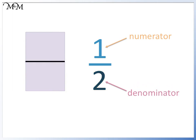This shape is divided into two parts. The numerator, which is 1, tells us how many parts to shade in. So one part is shaded in. The fraction one-half tells us that one out of two parts are shaded in.